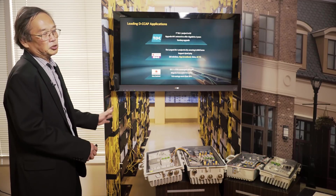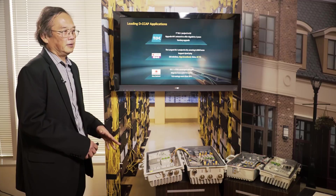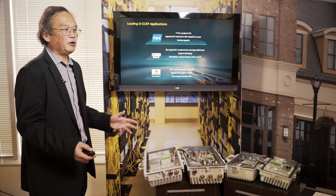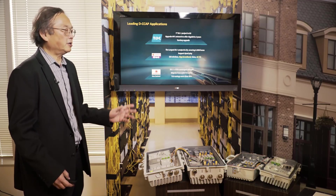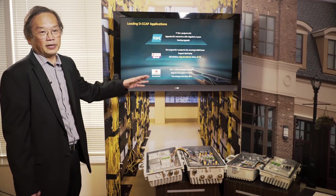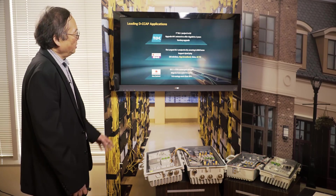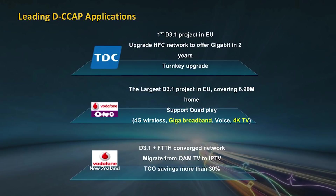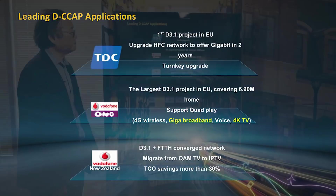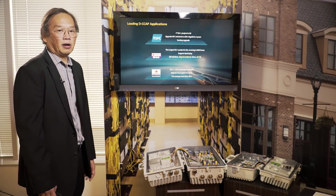This solution has been deployed in the US in the few-hundred-unit range with several different operators in different parts of the country. Worldwide it has been a fairly big success. TDC in Denmark is our lead customer for DOCSIS 3.1 deployment. They use the Huawei solution end-to-end to upgrade their entire HFC network. It has been deployed successfully for the last two years and offers gigabit solutions to TDC's customers. That was the first DOCSIS 3.1 project in the EU.